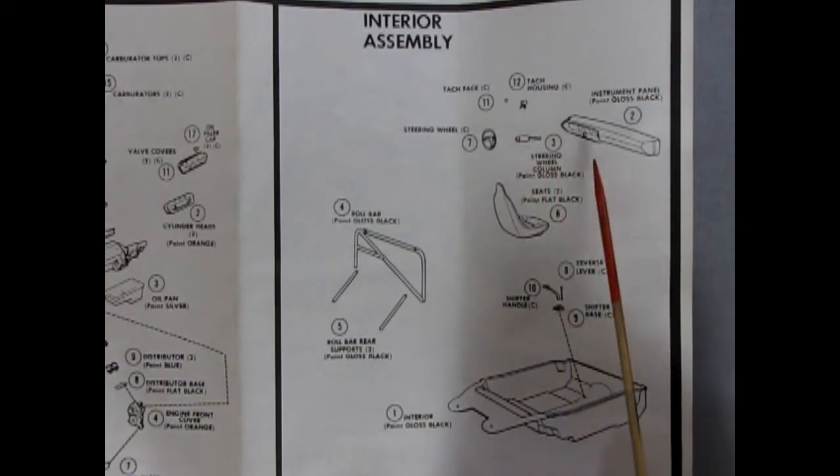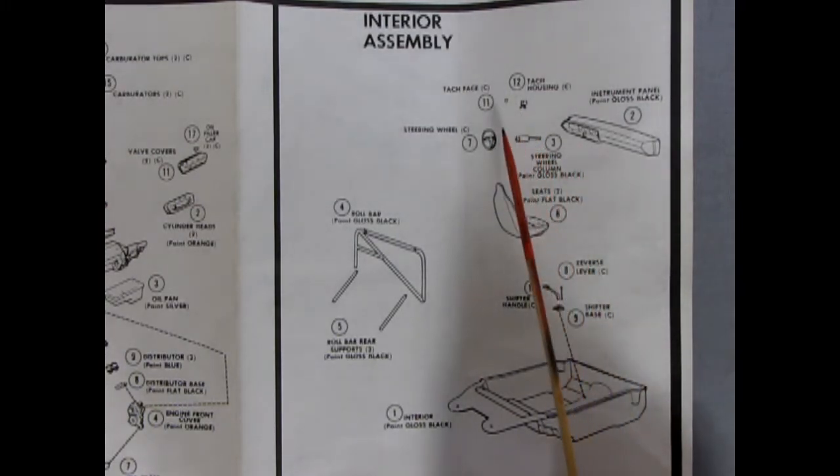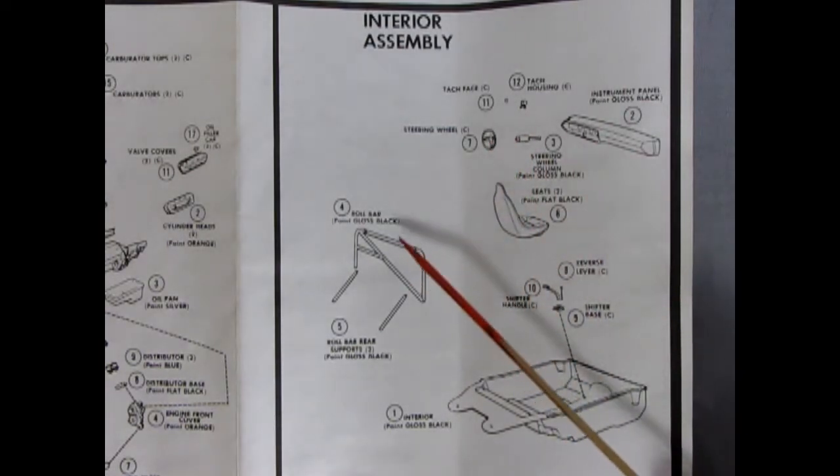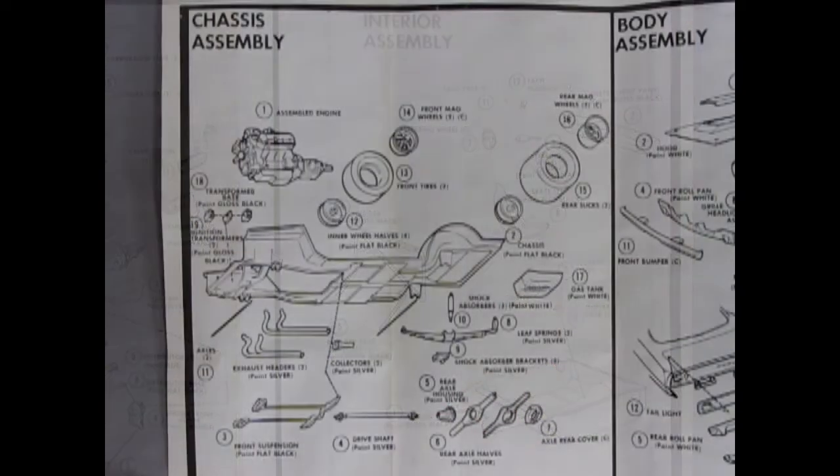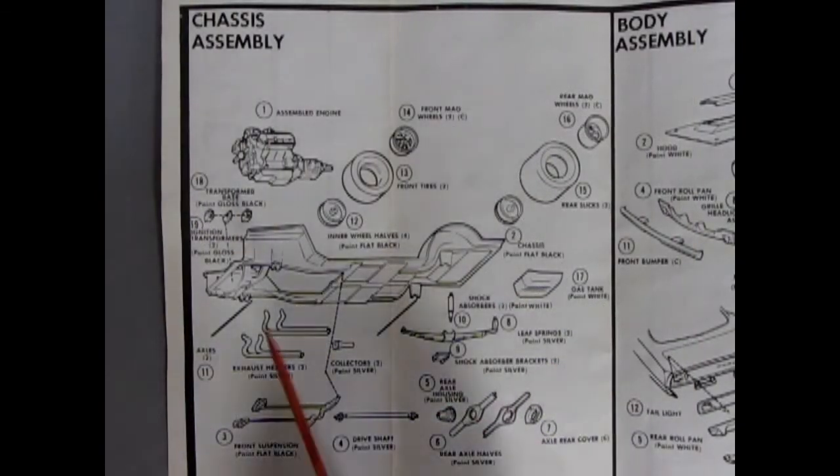We've got two front bucket seats, a separate steering column, the instrument panel, the tachometer with a tach face, and a steering wheel. And then we've got our three-piece roll bar, which would be roll bar and the rear supports.